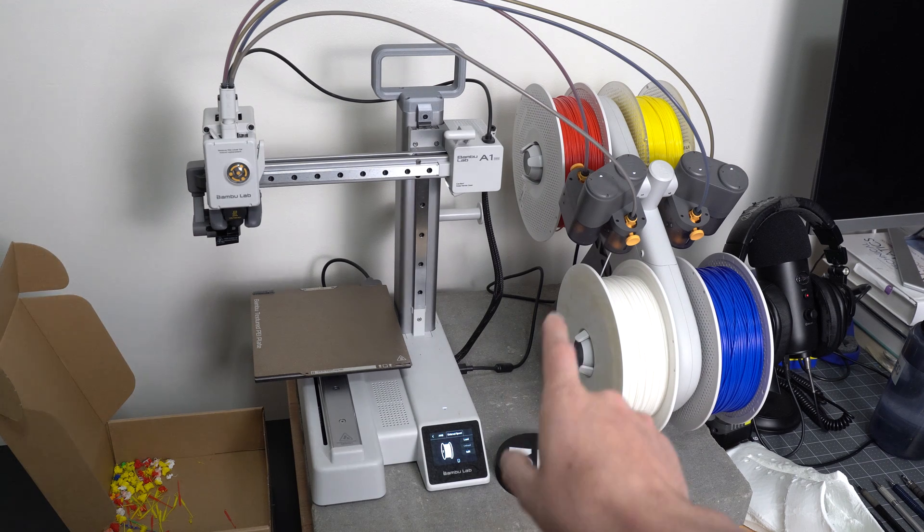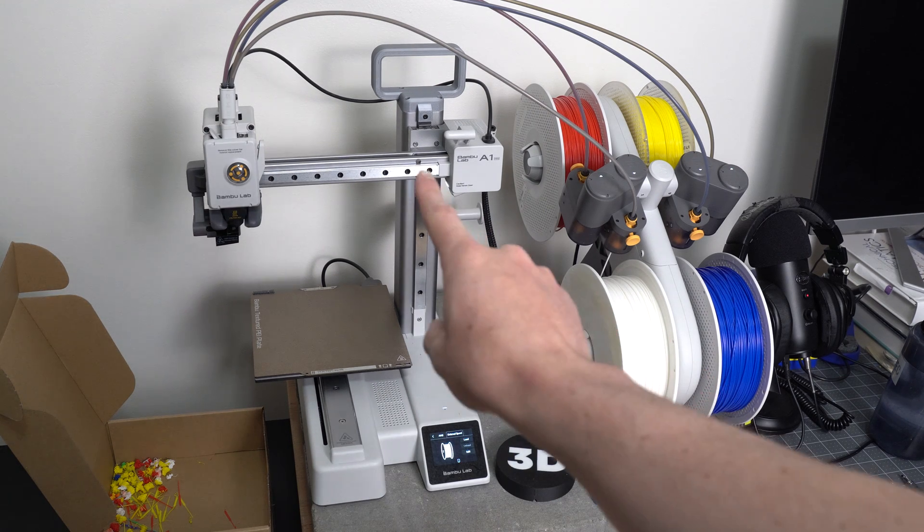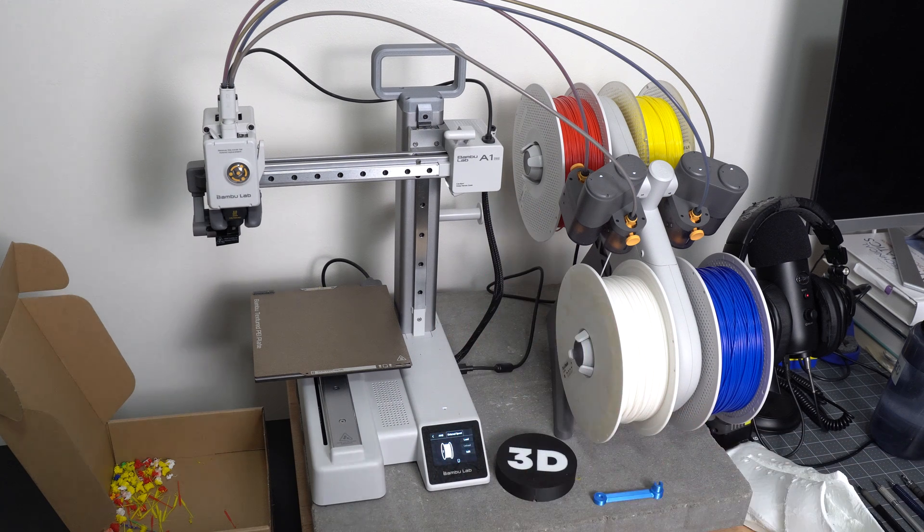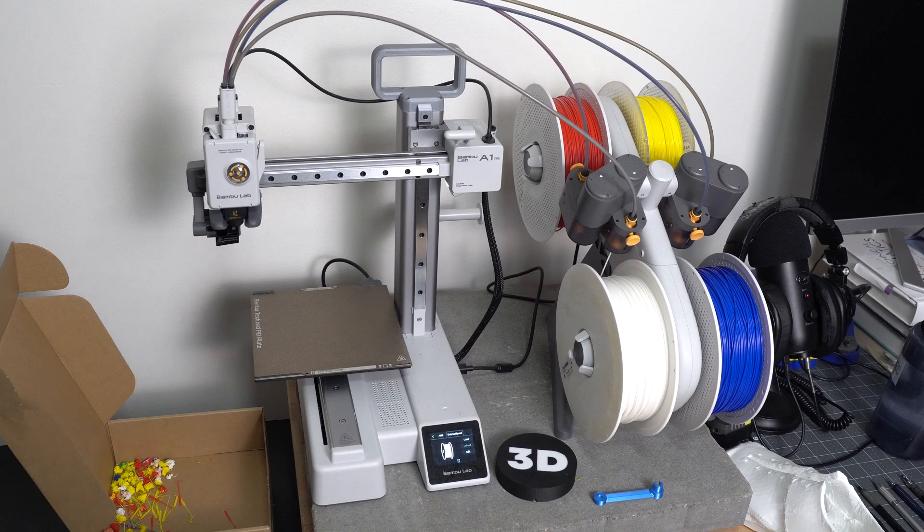So I got a question recently about how to switch from the AMS light to the spool on the back of the A1 mini or the A1 series, so let's take a look at how to do that. It's pretty straightforward.